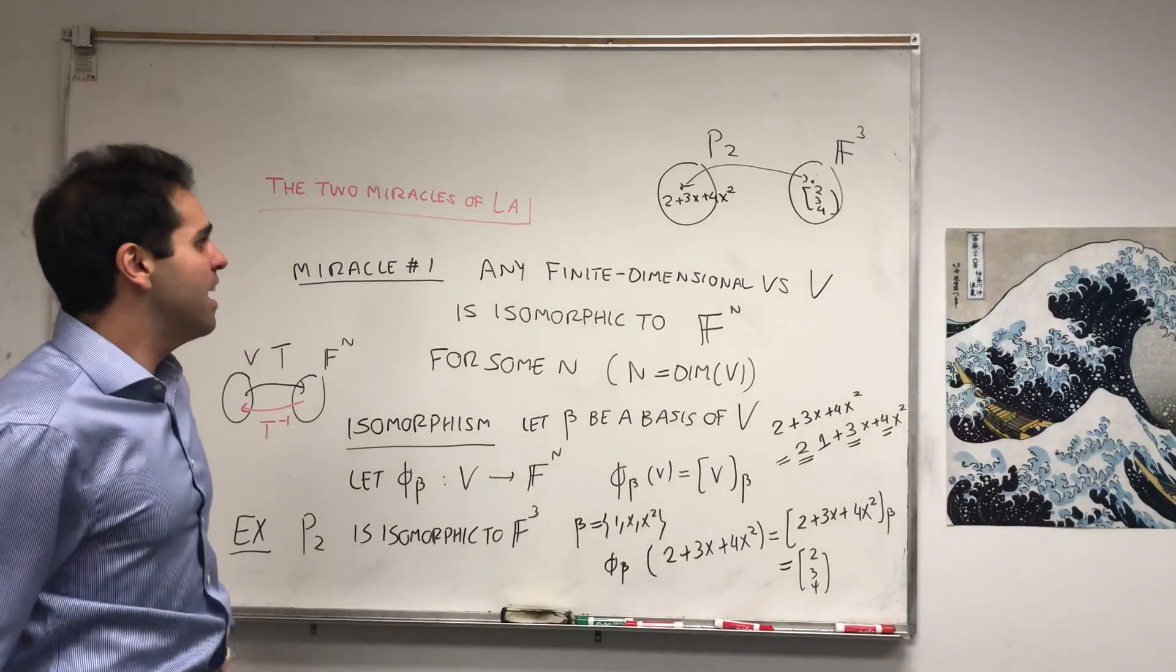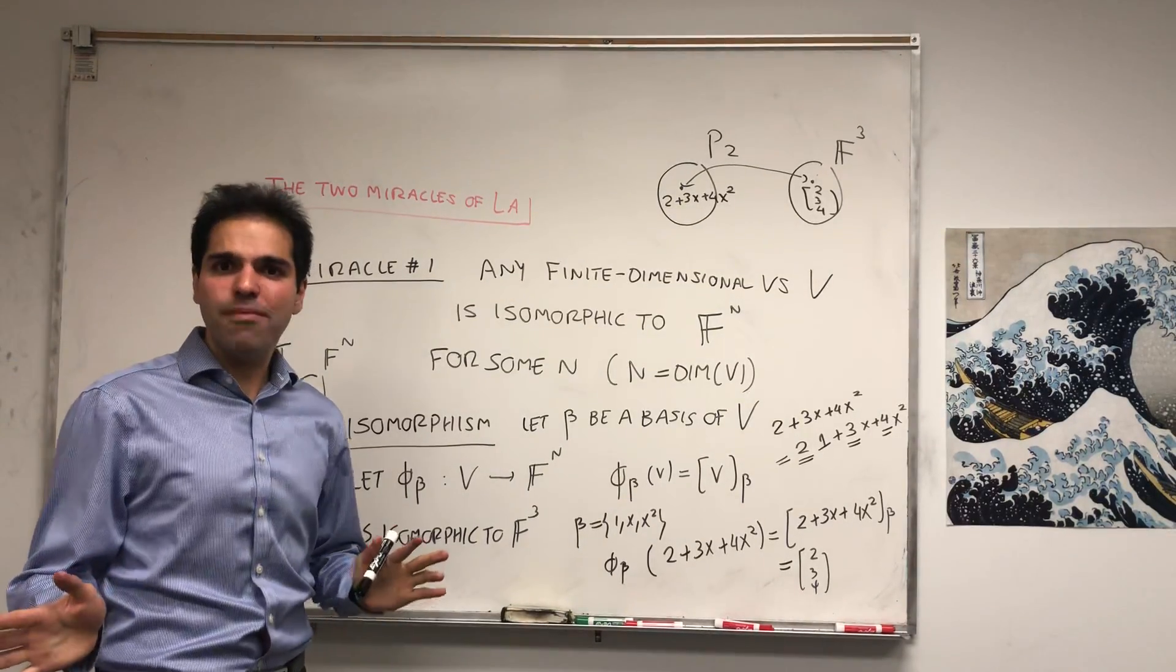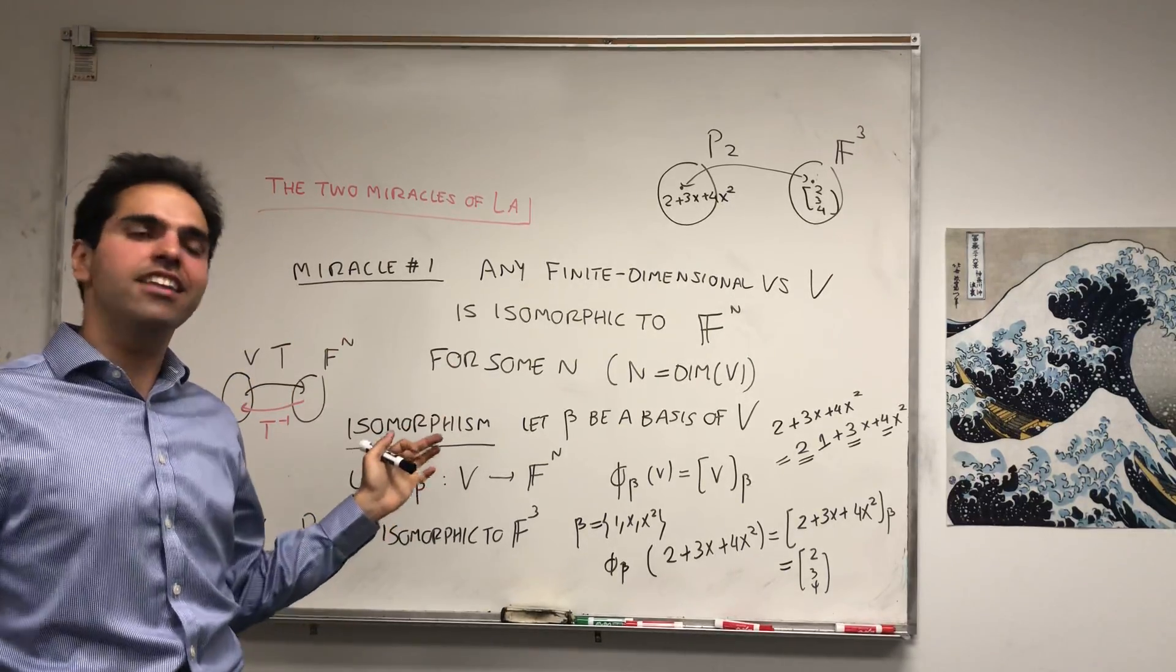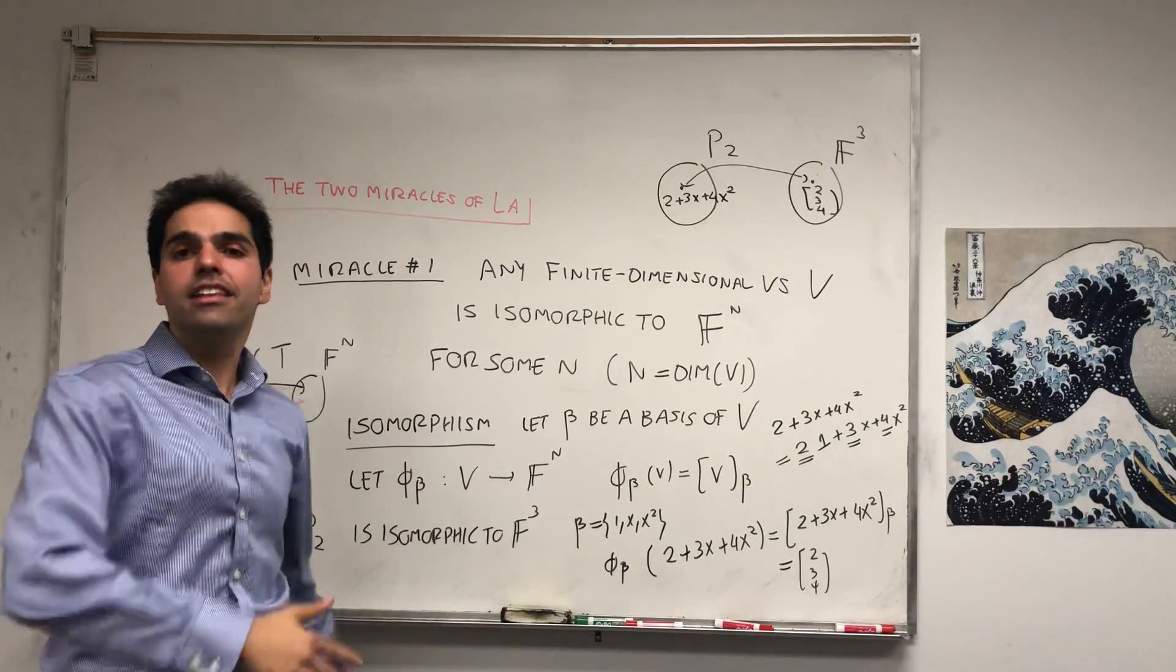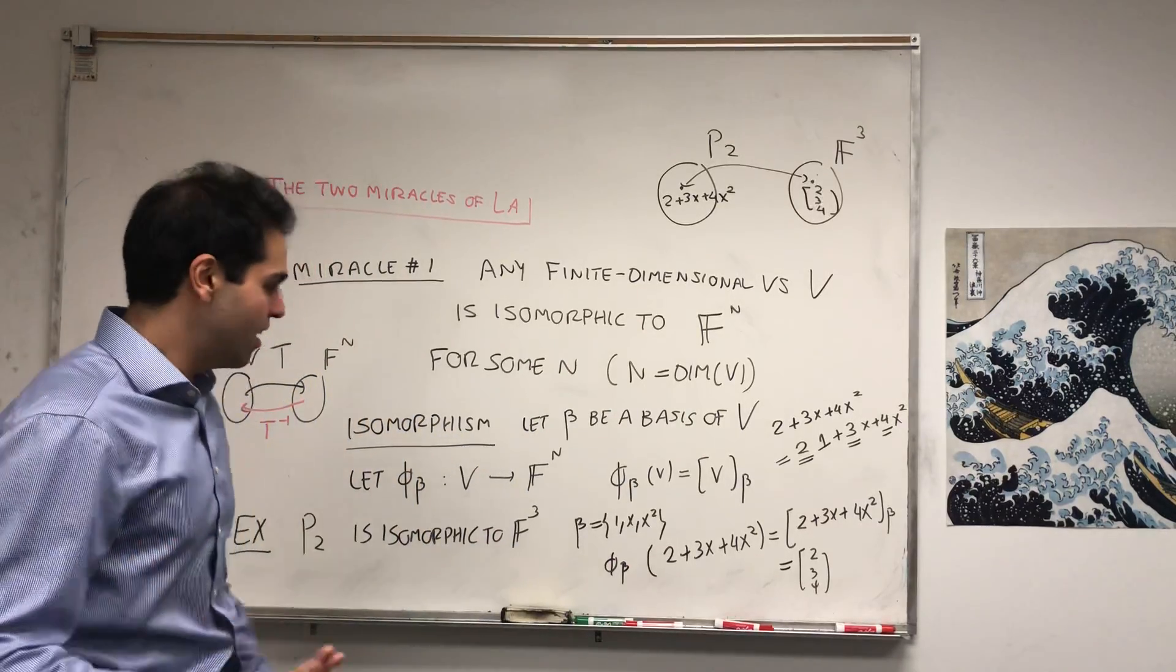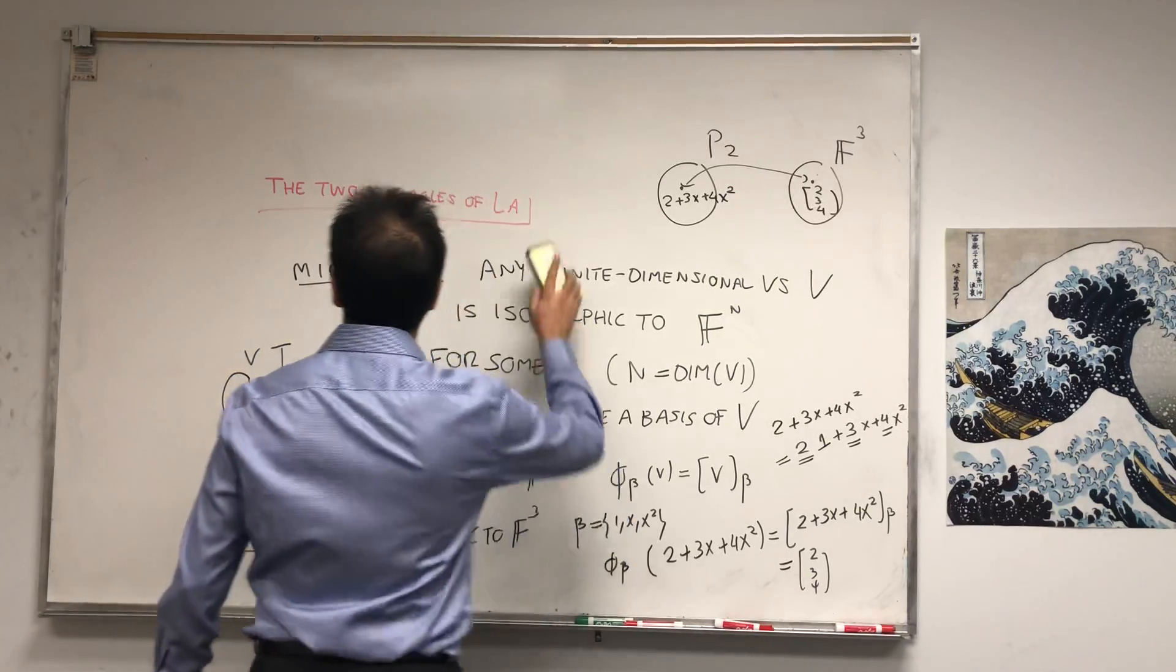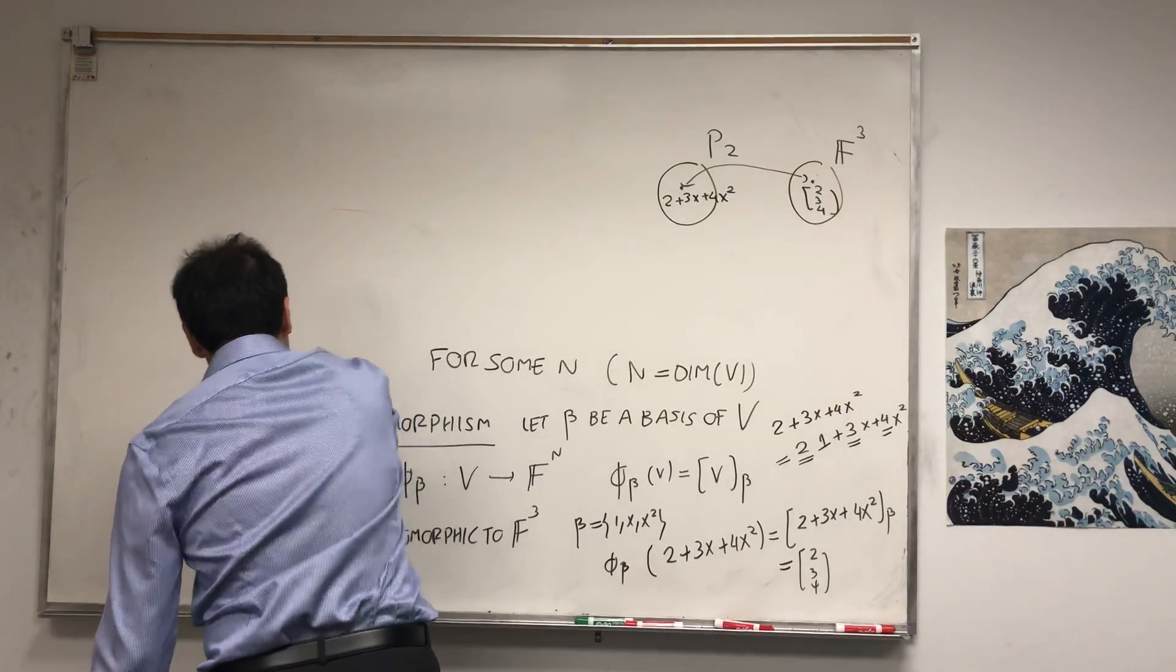So this is cool, and not true for infinite-dimensional ones, except I think if you consider cardinality. So if you have a vector space with a countable basis, this is isomorphic to set of sequences, just like Hilbert spaces, for example. I think that's true, but yeah, any two Hilbert spaces are isomorphic. So correct me if I'm wrong.